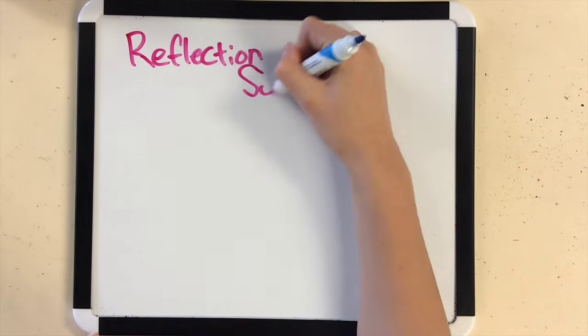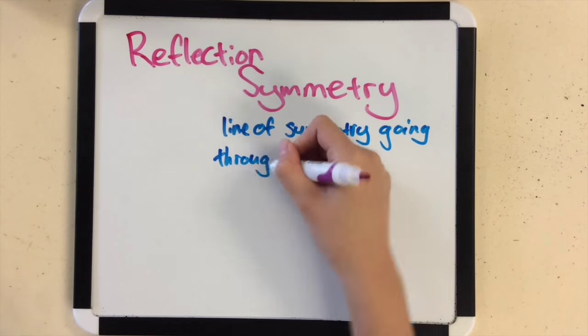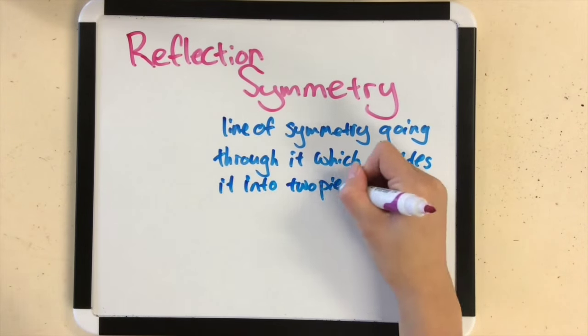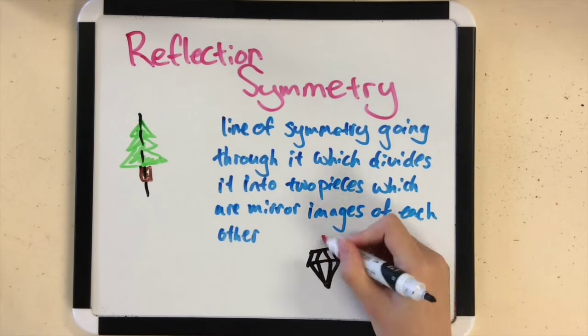such as reflectional symmetry, a line of symmetry going through an object which divides it into two pieces which are mirror images of each other,